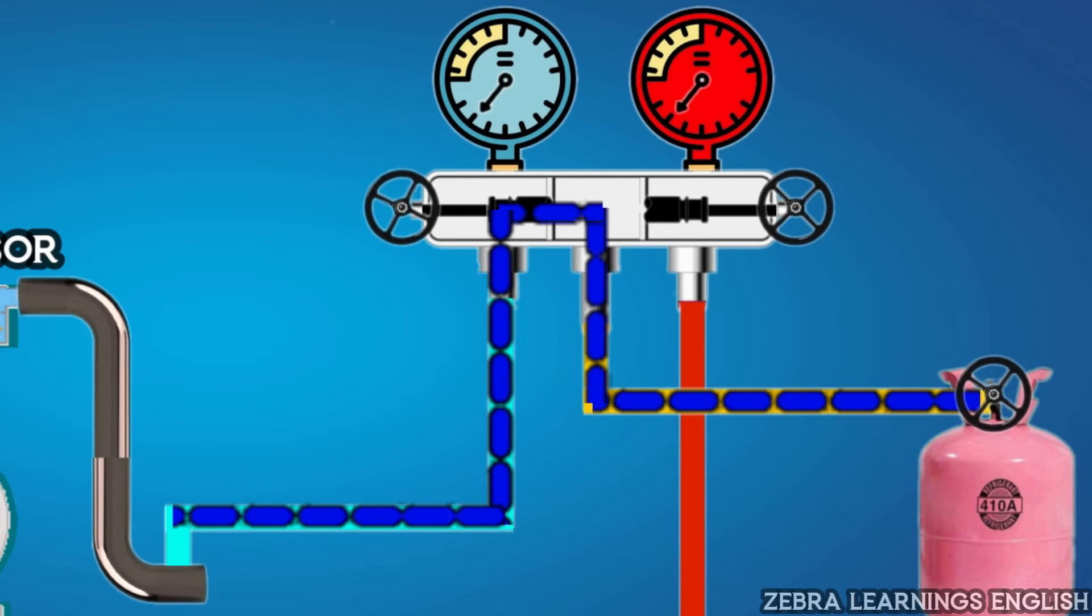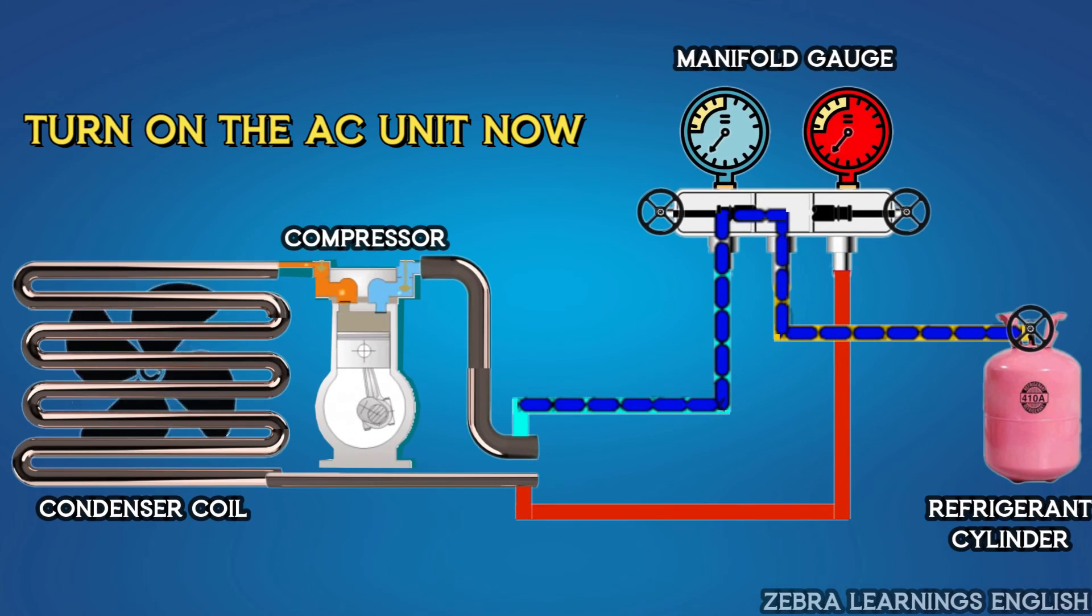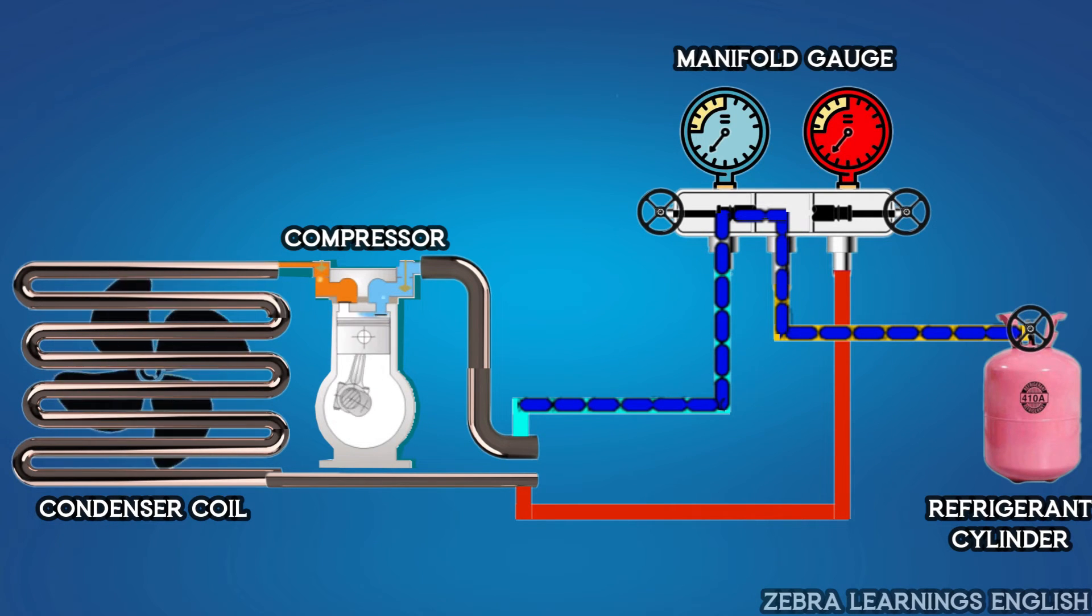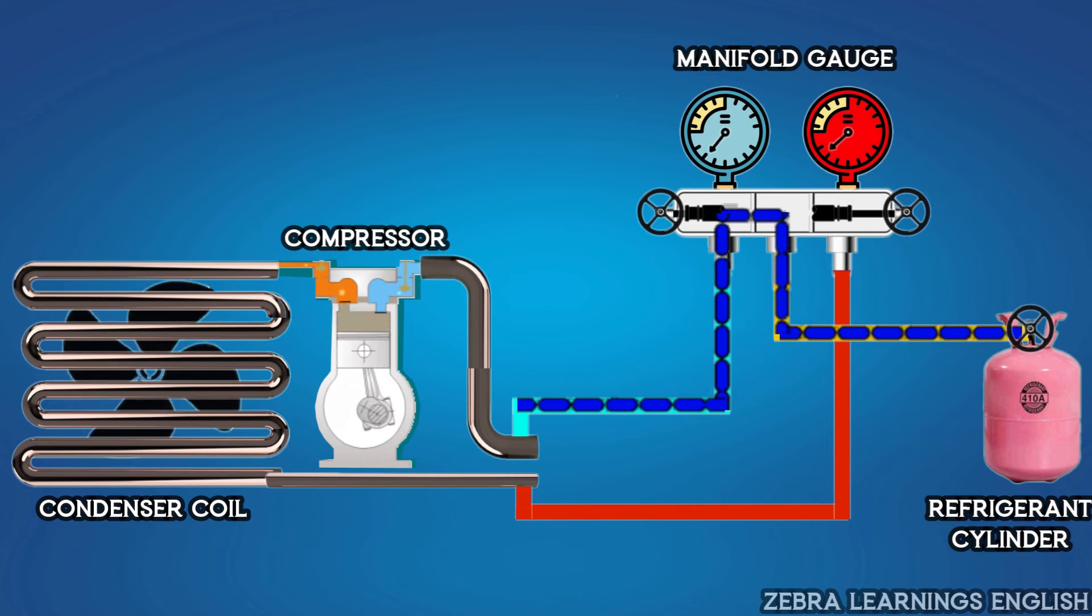Now, we can charge the refrigerant in the unit. First, turn on the unit and open the valve of the refrigerant cylinder. Then, open the low-pressure valve. After opening, refrigerant starts charging from cylinder to suction line. This process should be done only when the unit is running.